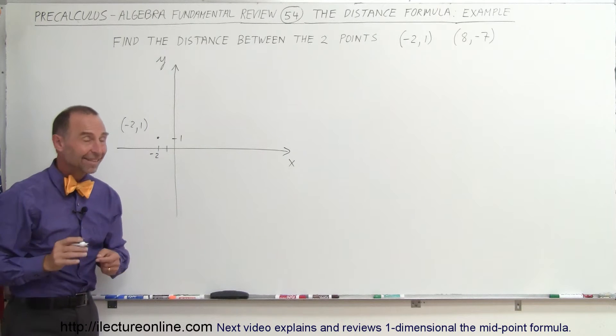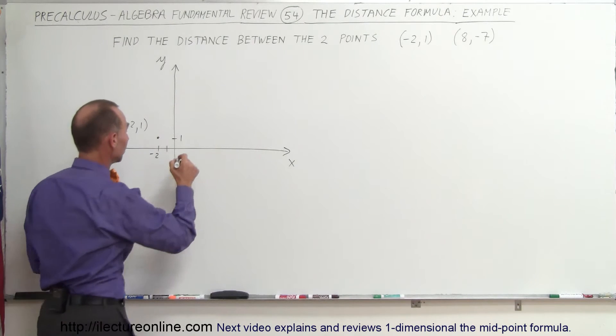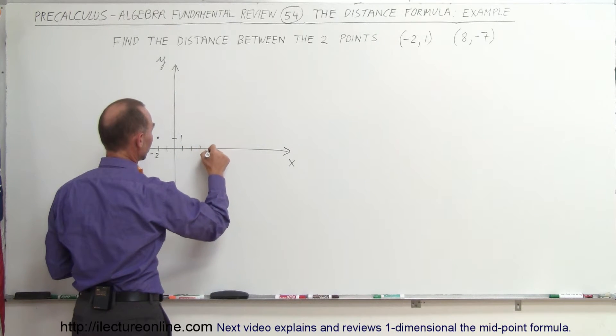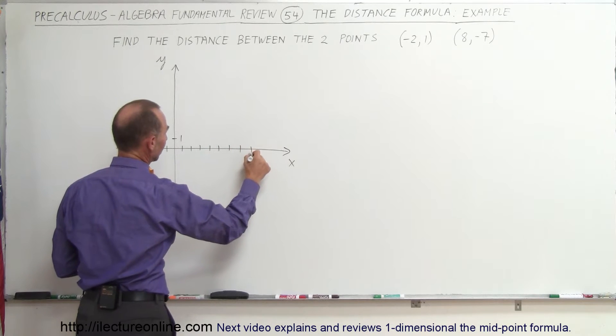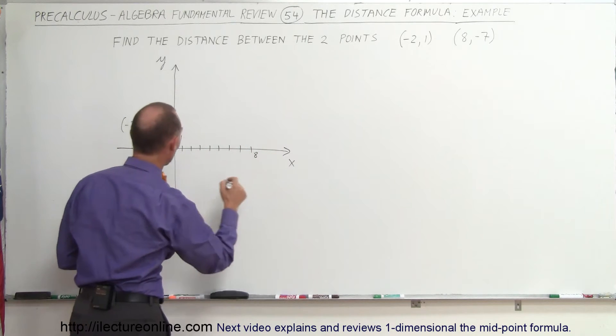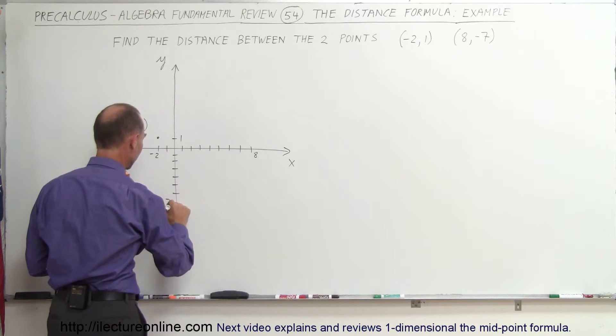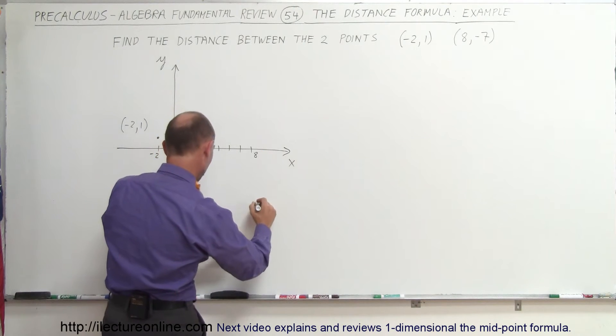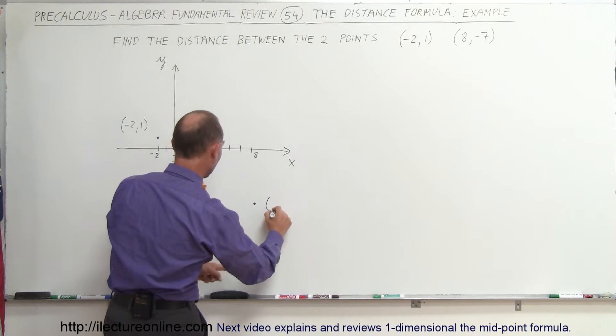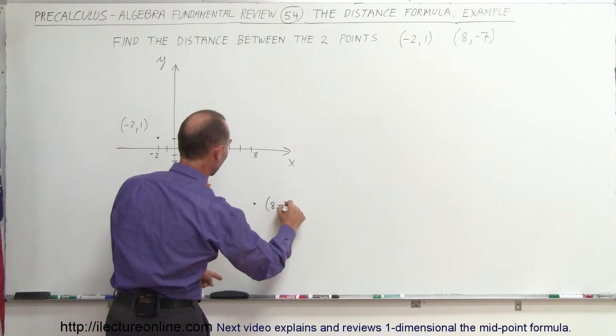The second point is 8, negative 7, meaning 8 in the x-direction. So 1, 2, 3, 4, 5, 6, 7, 8. And negative 7 in the y-direction: 1, 2, 3, 4, 5, 6, 7, negative 7. And where those two points meet right here is the point 8, negative 7.